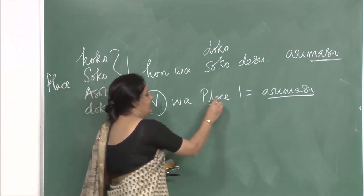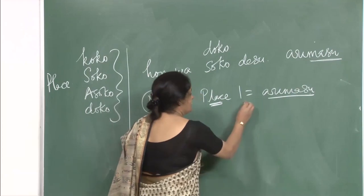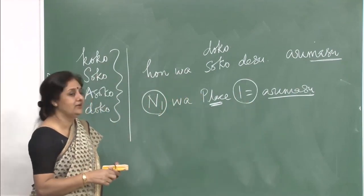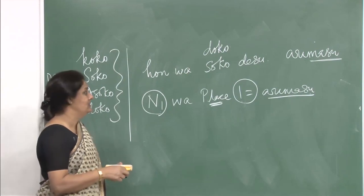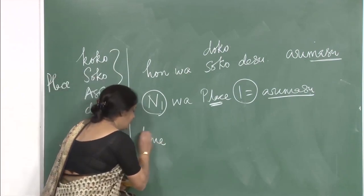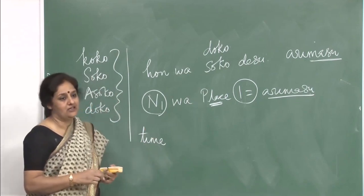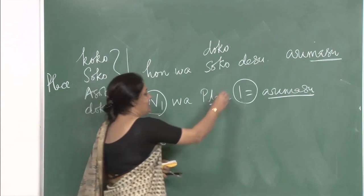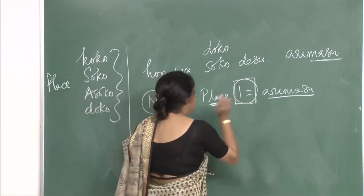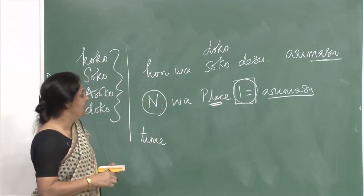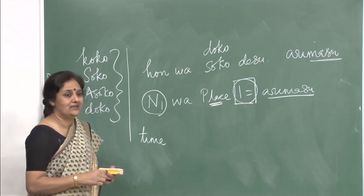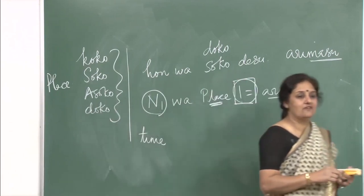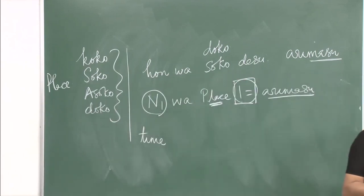The pattern: noun 1 wa place ni arimasu. This particle ni you have done in previous lessons with time — hachi ji ni ikimasu, ku ji ni nemasu. Here it has a different usage. Noun 1 wa place ni arimasu shows the existence of something at a certain place.